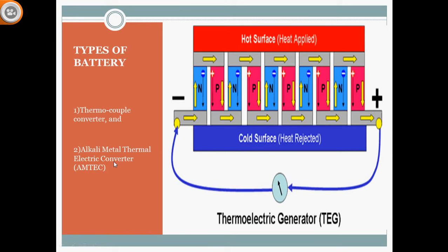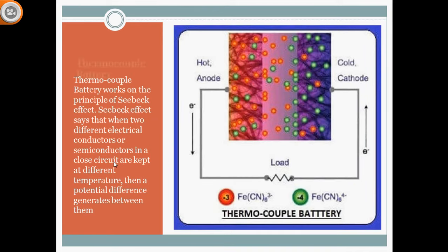The thermocouple converter works on the principle of the Seebeck effect (CVAC effect). The CVAC effect states that when two different electrical conductors or semiconductors in a closed circuit are kept at different temperatures, a potential difference or EMF is generated between them.